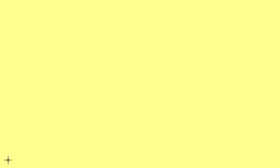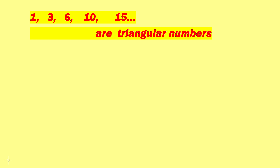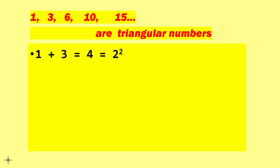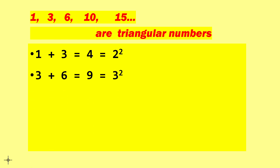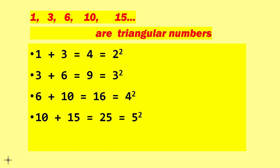How are triangular numbers related to square numbers? Let's add two consecutive triangular numbers: 1 + 3 = 4, which is a perfect square. Next, 3 + 6 = 9, which is 3 squared. Then 6 + 10 = 16, also a perfect square. And 10 + 15 = 25, also a perfect square. So if we add two consecutive triangular numbers, we always get a perfect square number.